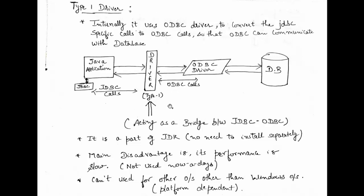The Type 1 driver acts as a bridge between JDBC and ODBC, as you can see. It converts the JDBC calls from the Java application into ODBC calls that are understandable by the ODBC driver. The ODBC call is then further converted into a database-specific call so that the database can understand the instruction. It is the whole responsibility of the ODBC driver to communicate with the database — not the Java application directly. This is why it is called the JDBC-ODBC bridge driver.